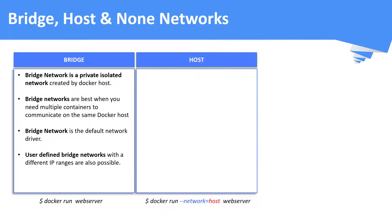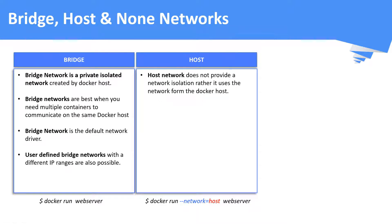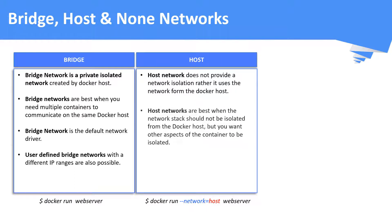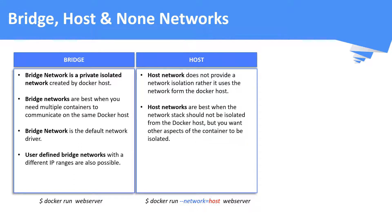Second is host network. Host network does not provide network isolation like bridge network — instead it uses or shares the network from the Docker host. Host networks are best when the network stack should not be isolated from the Docker host network.